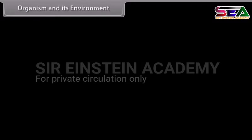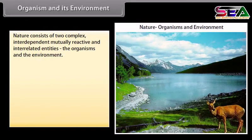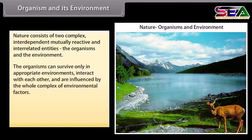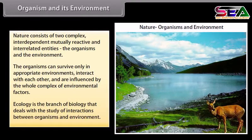Nature consists of two complex interdependent, mutually reactive and interrelated entities: the organisms and the environment. The organisms can survive only in appropriate environments, interact with each other, and are influenced by the whole complex of environmental factors. Ecology is the branch of biology that deals with the study of interactions between organisms and environment.